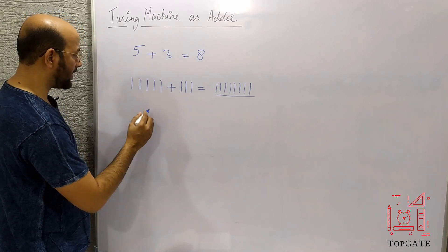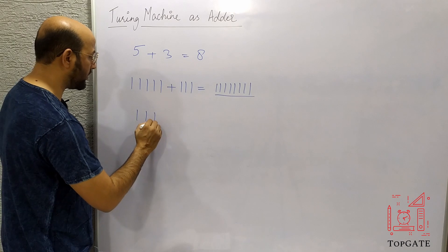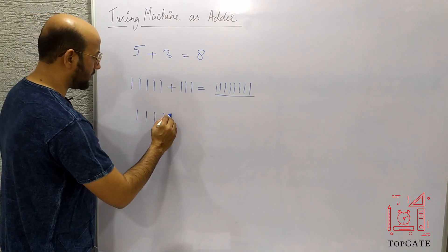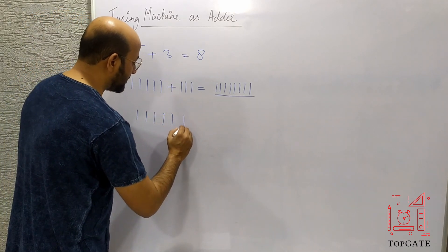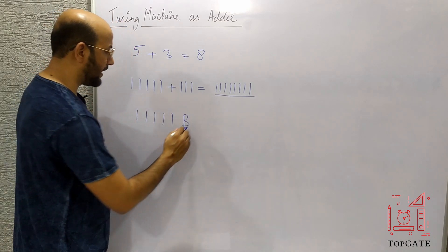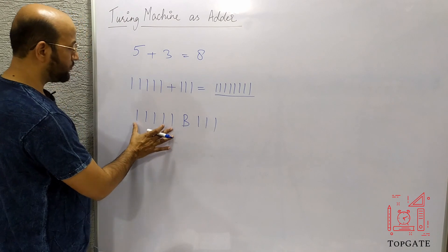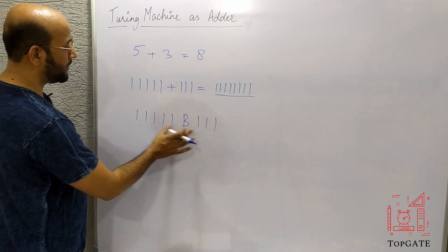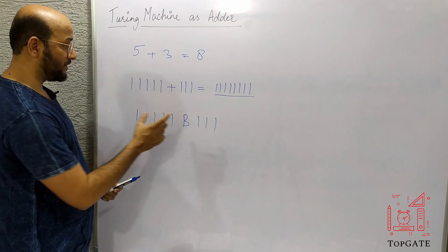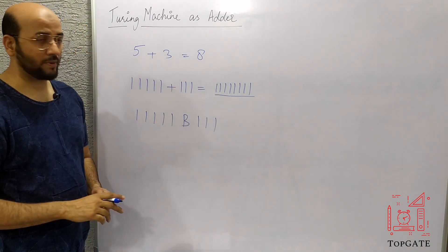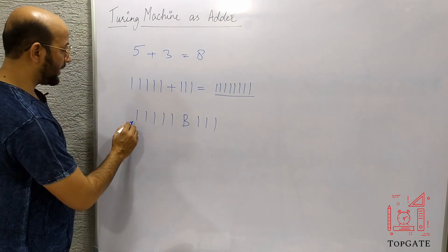The approach is: take an input tape and load the two numbers onto it — five ones, then a blank B as a separator, then three ones. On this input tape we need to display eight ones as the output simultaneously.